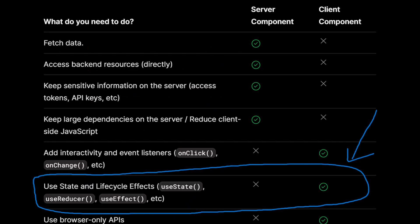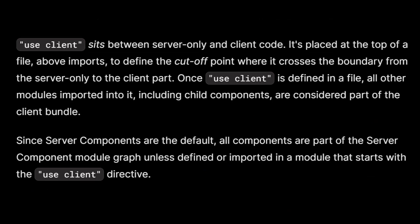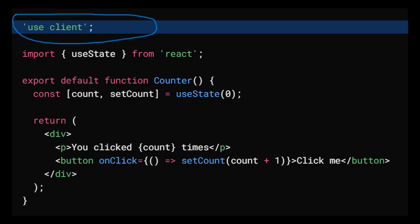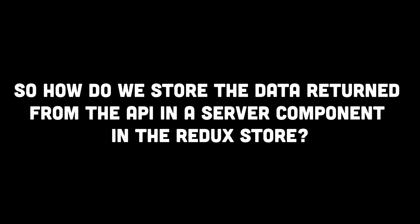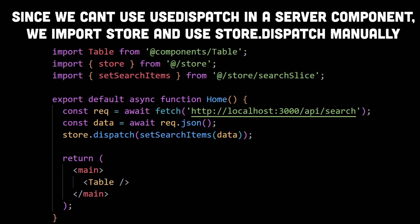Next.js 13 doesn't allow us to use hooks in a server component at all — we can only use hooks in client components, basically components containing the use client directive. So how do we store the data returned from the API in a server component into the Redux store?